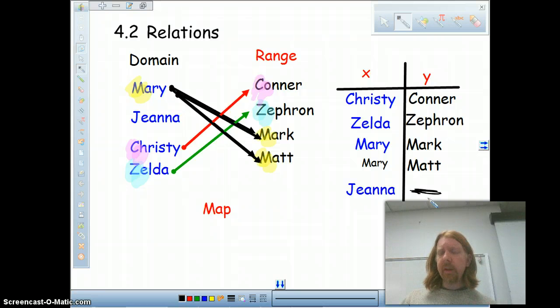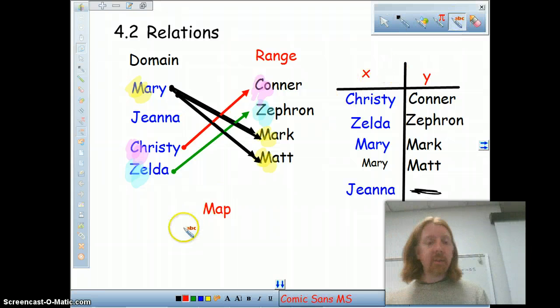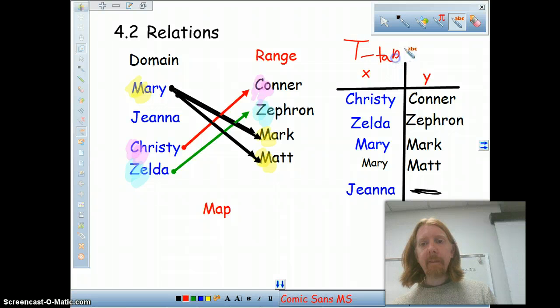So, now what I've done is I've organized my chart. If I go across the chart, I've got Christy and Connor are paired, Zelda and Zephyrin are paired, Mary, Mark, Mary, Matt, Gina, nobody. So, what I've got going on, again, is another way of illustrating it. We call this the T-table.